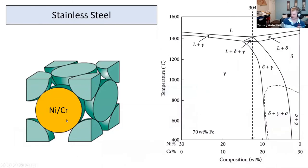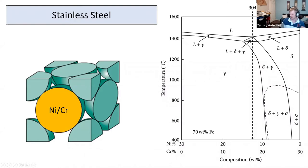In stainless steel, you add nickel or chromium, which helps prevent corrosion of the steel by forming a chromium oxide or nickel oxide surface layer that is more corrosion-resistant than iron oxide. Iron oxide will flake, whereas chromium oxide makes a stable oxide layer. There's a calculation you can do to see what kind of oxides will make stable or unstable oxide layers.